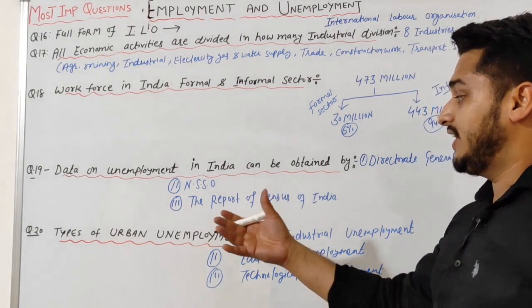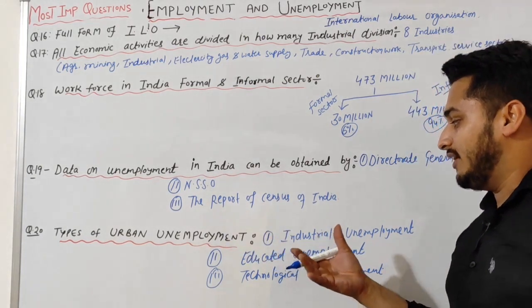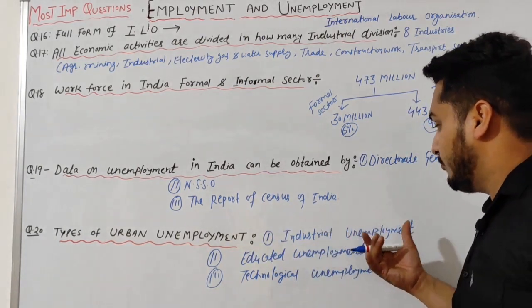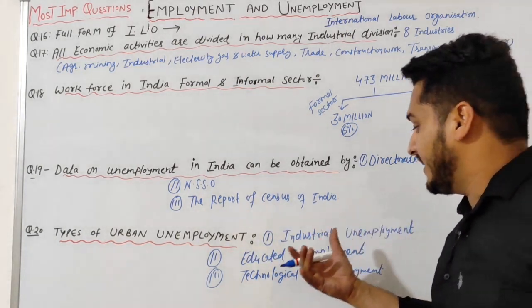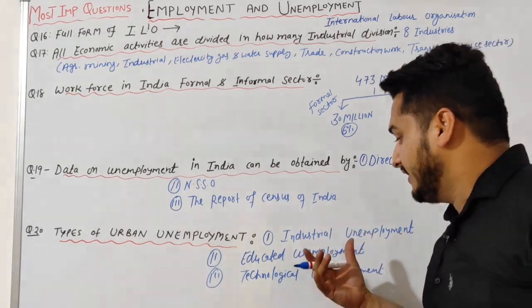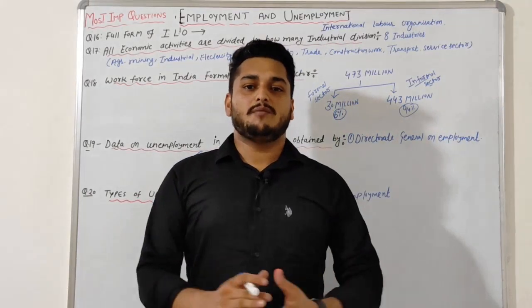So there are three types of urban unemployment: the first is industrial unemployment, the second is educated unemployment, and the third is technical unemployment.